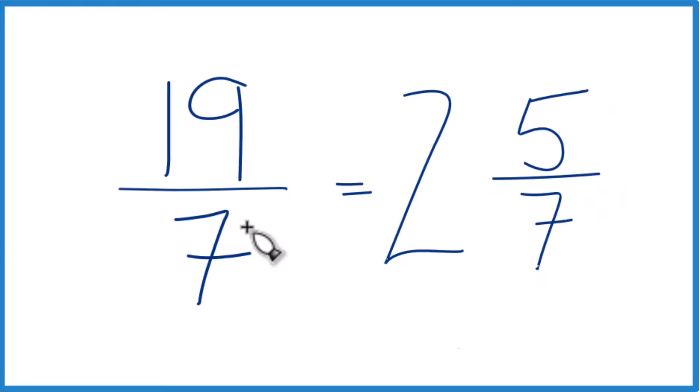And this improper fraction 19 sevenths, that equals the mixed number 2 and 5 sevenths. And you can check that.